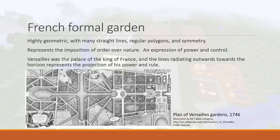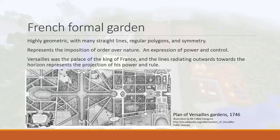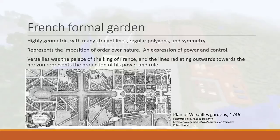Moving on to different types of garden design. This is a picture of the Versailles gardens in France — a good example of the French formal garden, which is typically highly geometric with straight lines, regular polygons, and symmetry. You can see in the map that all the paths are very straight and there's a symmetrical man-made lake with geometrical patterns in the gardens. The idea is the imposition of order over nature — nature is wild and chaotic, so you put straight lines over the landscape to represent order and rationality.